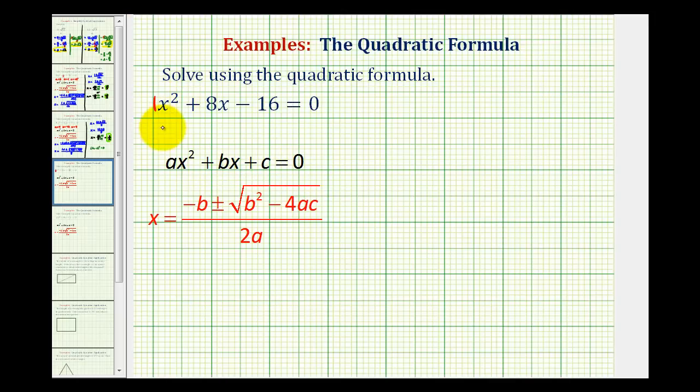So for our equation we need to recognize that a is equal to 1, b is equal to positive 8, and c is equal to negative 16 because of the subtraction.